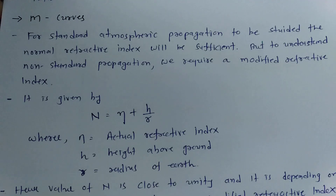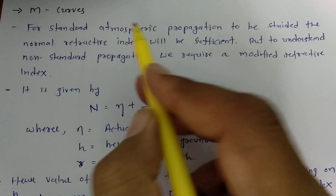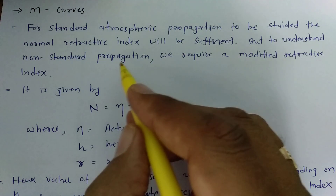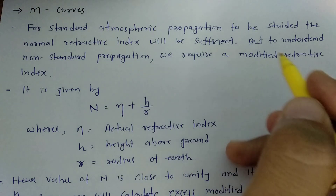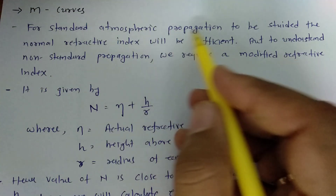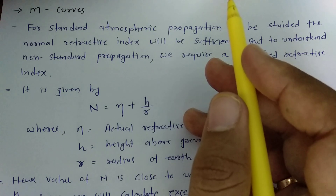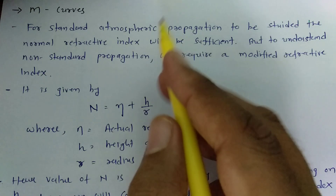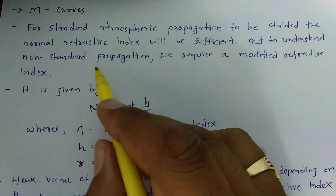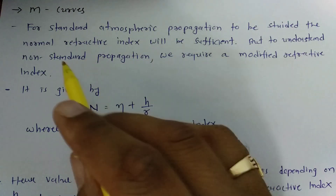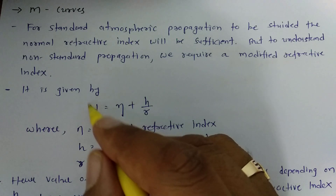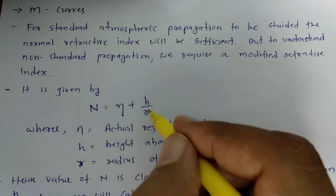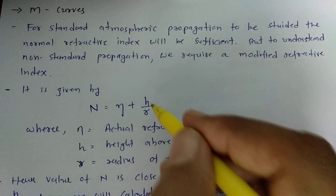For standard atmospheric propagation, we need only the normal refractive index. But for non-standard propagation, we require the modified refractive index. The modified refractive index N is equal to eta plus h over r, where eta is the actual refractive index, h is the height from the earth, and r is the radius of the earth.